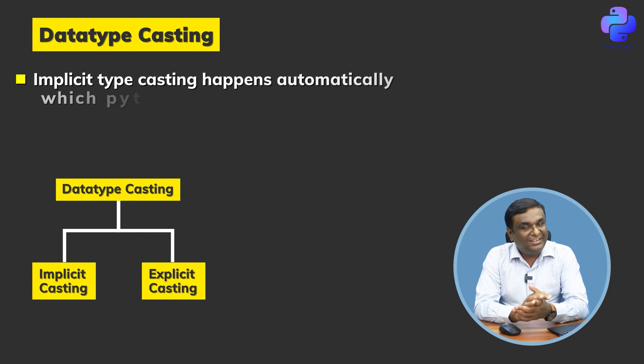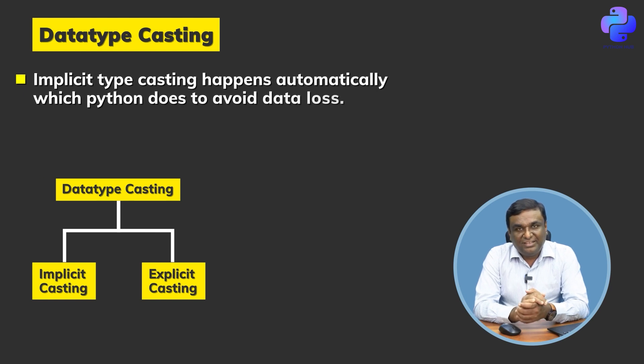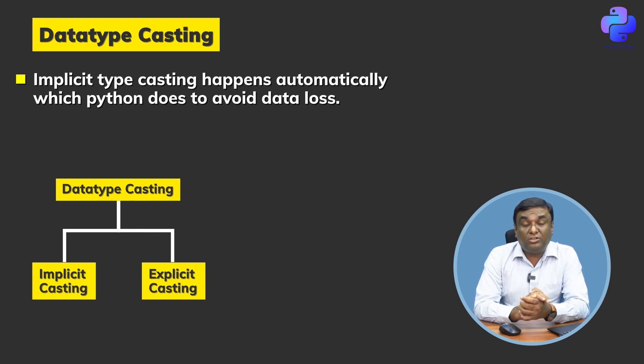Casting is all about changing the data types. Python has a beautiful feature where the type can be casted internally without explicitly calling it out. Python itself would recognize the change in the data type and update accordingly because the compilers are so smart now. This is what we call implicit type casting.